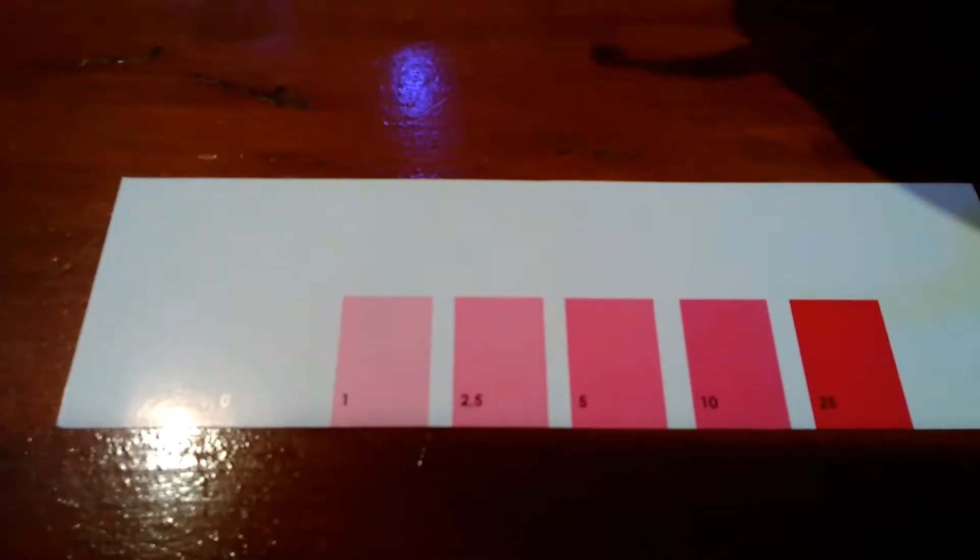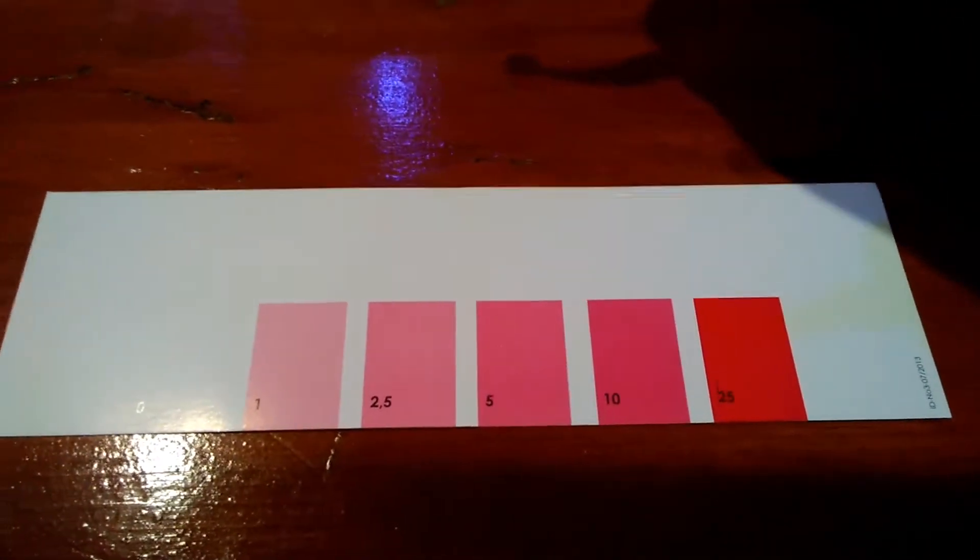So here's the color code chart: 0, 1, 2.5, 5, 10, and 25.